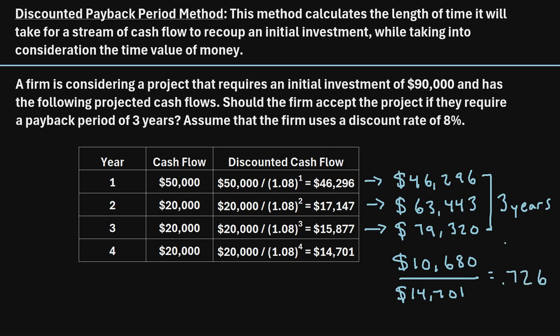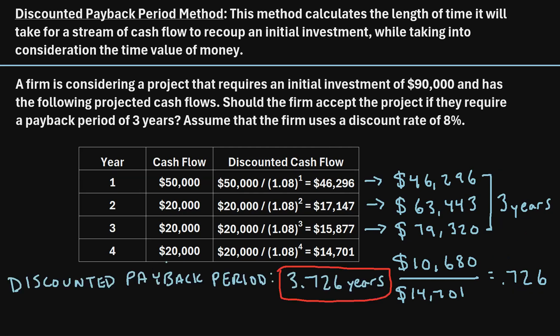So the total amount of time it's going to take to recoup the $90,000 is three years plus another 0.726 years. The total discounted payback period is 3.726 years.